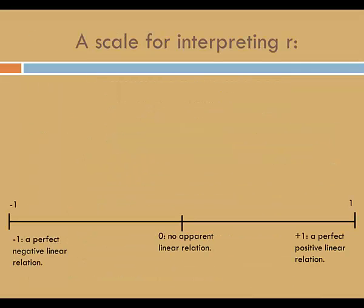We know that negative 1 indicates a perfect negative linear relation, that 0 indicates no apparent linear relation, and positive 1 indicates a perfect linear relation. But there is a lot of room in between. Let's see if we can come up with a scale for interpreting R.